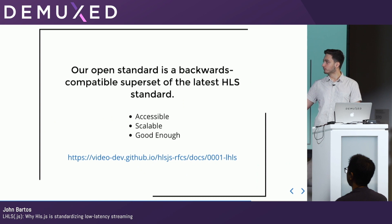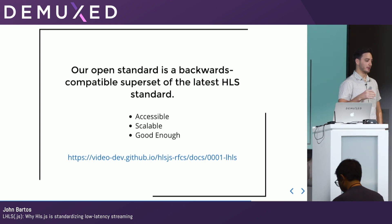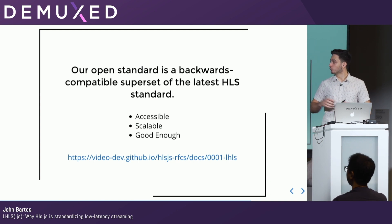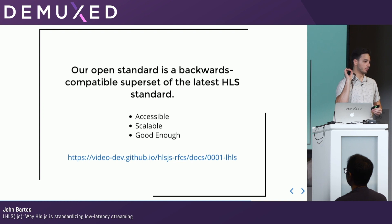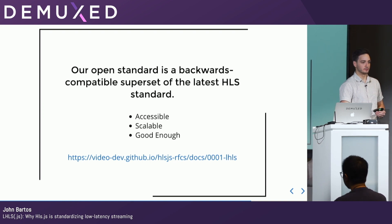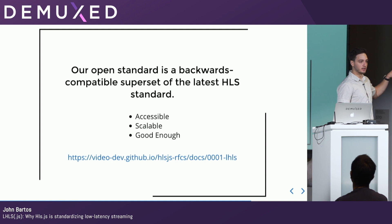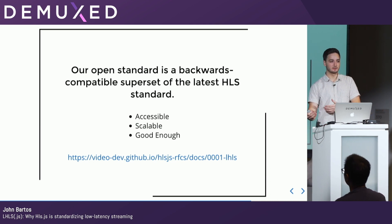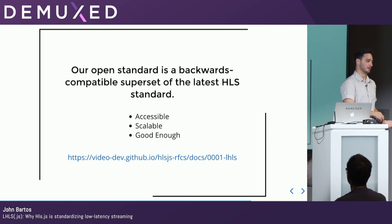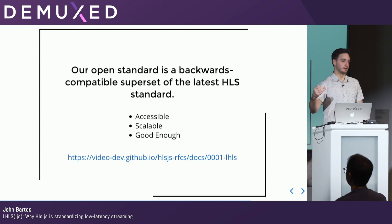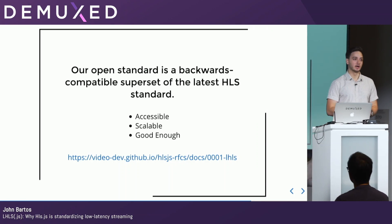A bit about the proposal itself: we've created a backwards compatible superset of the latest HLS standard, 8216-Draft03 — the one that Pantos just keeps editing in his free time. What that means is you can make an LHLS stream with our proposal and deliver it to an iOS device and it'll just play as normal. You don't need to generate two streams if you don't want to. Our three design principles are: accessible — meaning easy, minimal, simple to understand; scalable — trying to hit the scale theoretically of HLS, not just in viewers but breadth of features, and we don't want to make something that doesn't work with ads because we all need to get paid; and good enough — meaning we're targeting about two seconds plus of latency. We're not chasing sub-second at the cost of everyone who actually wants to use this.